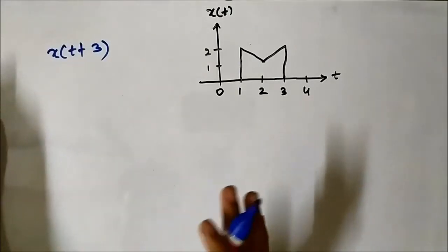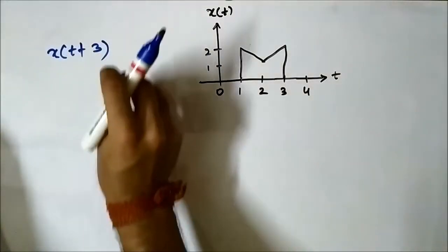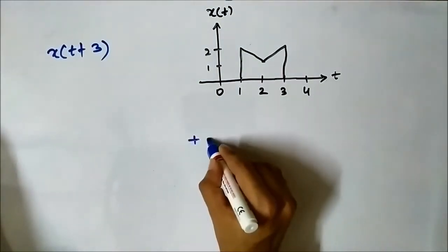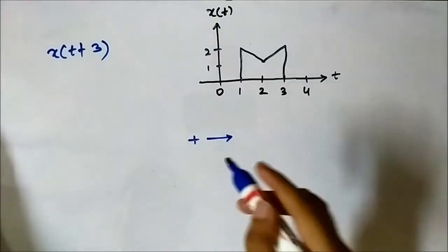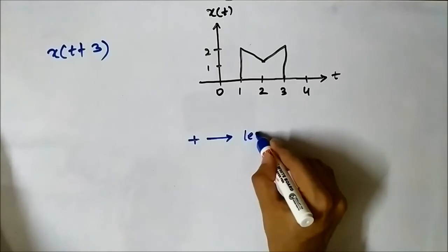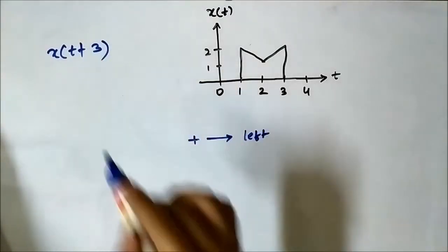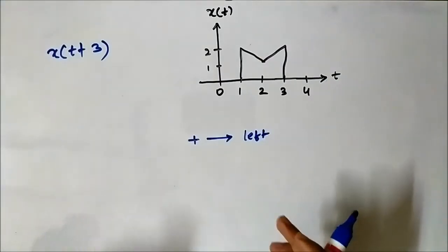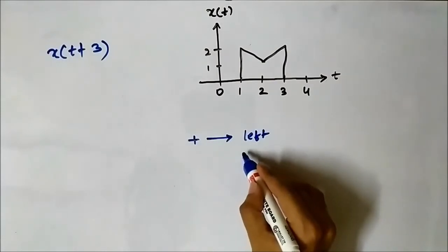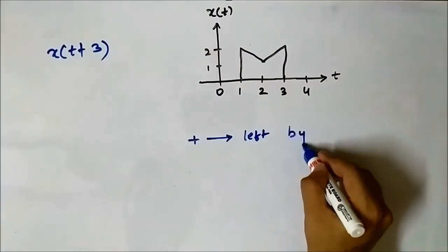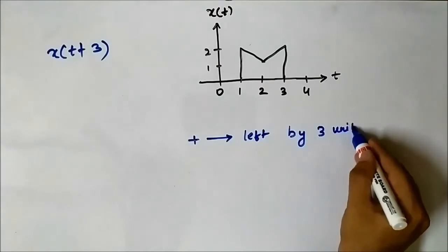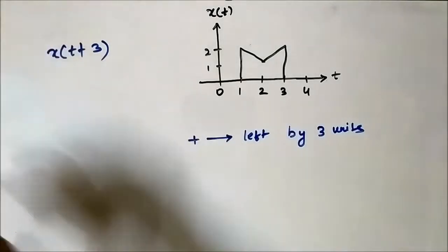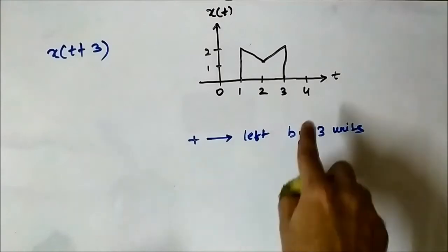Here the sign convention: if we want to perform the shifting operation directly, we have to follow the sign convention. When we see this kind of time-shifted expression, the plus sign means that the shifting will take place to the left, and the value after the sign gives us by how many units the shifting will take place. So here the shifting will take place to the left by three units.